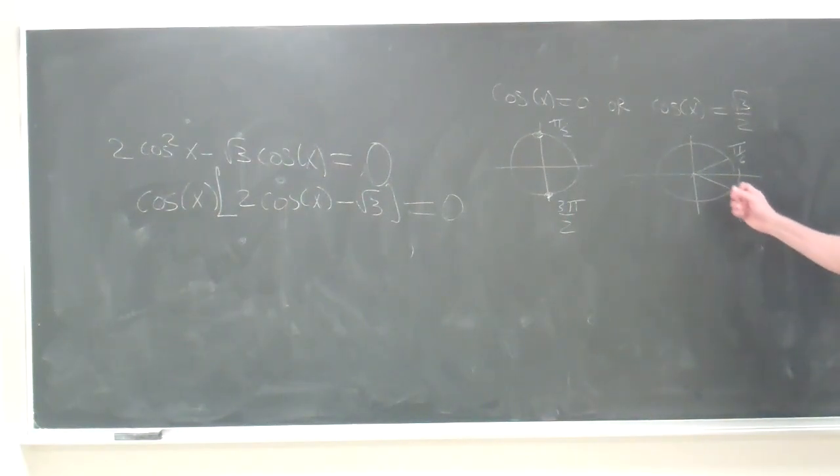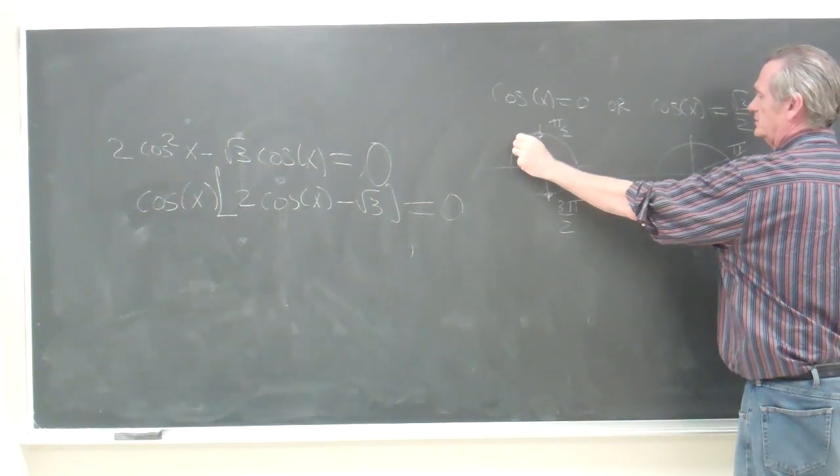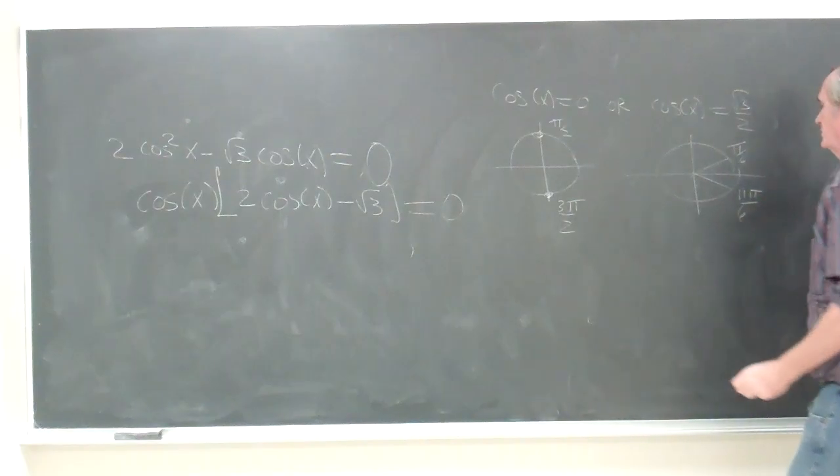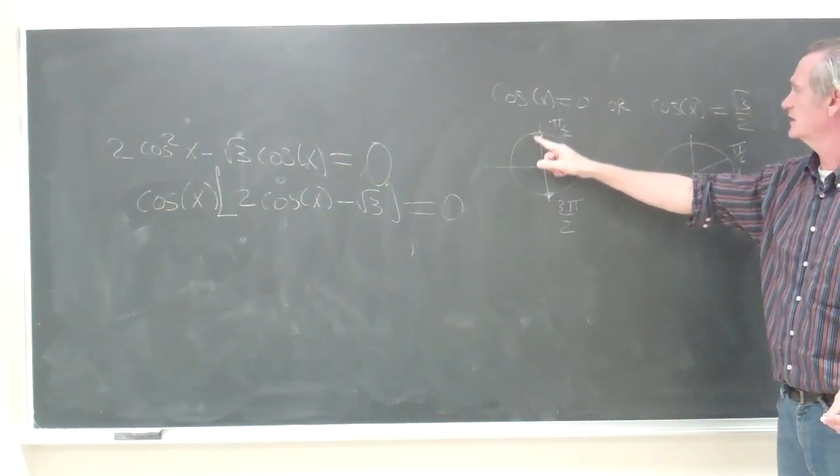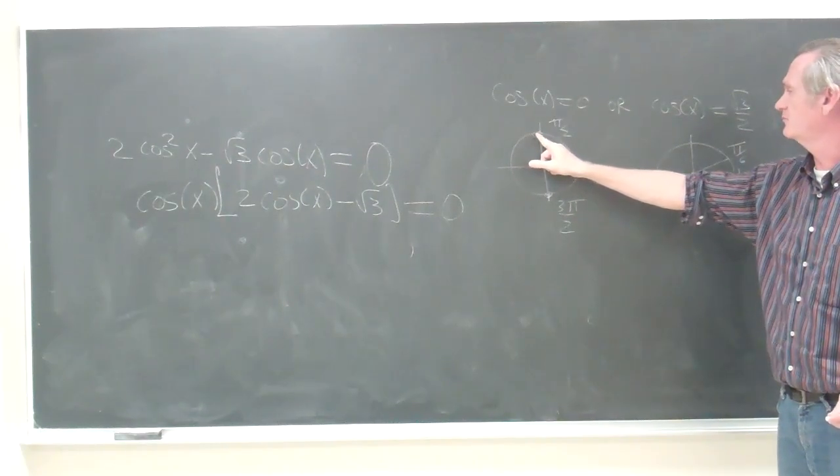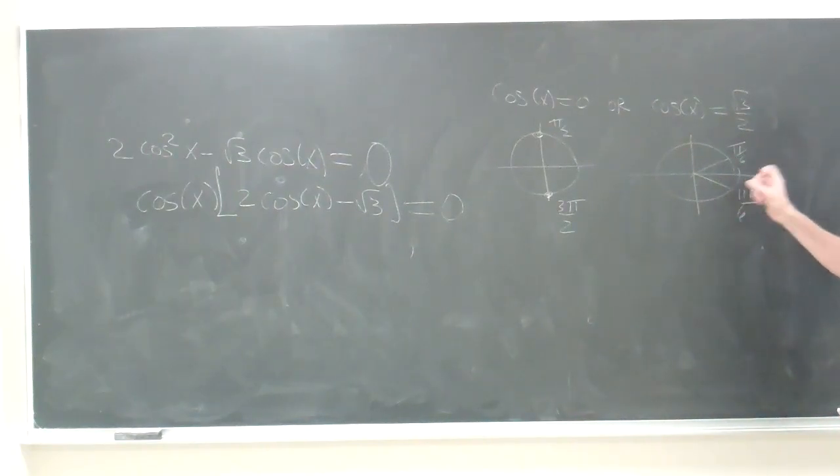Now those are the solutions between 0 and 2π. So we have π/6, π/2, 3π/2, and 11π/6. But I want to find all solutions, so we need to translate all these solutions around 2π.